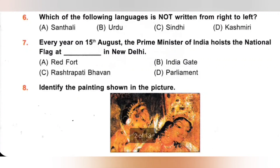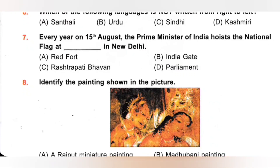7th. Every year on 15th August, the Prime Minister of India hoists the national flag at: A. Red Fort, B. India Gate, C. Rashtrapati Bhavan, D. Parliament. Every year on 15th August, the Prime Minister of India hoists the national flag at Red Fort in New Delhi. Option A is the correct answer.